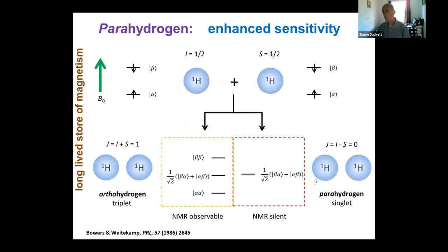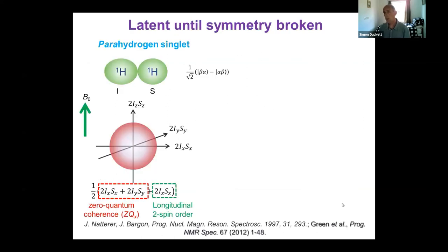Going forward, this describes parahydrogen — we've already heard some of this this morning. What we're talking about is looking at the singlet state of hydrogen, which we've seen is relatively easy to create, and what we're going to have to do is to break the symmetry of that state.